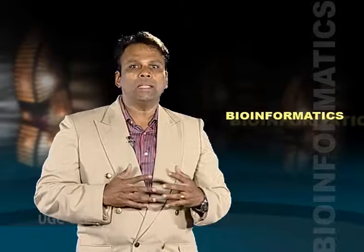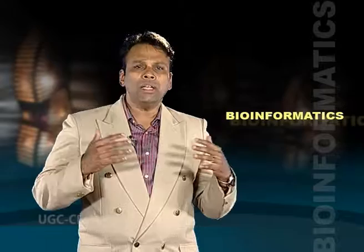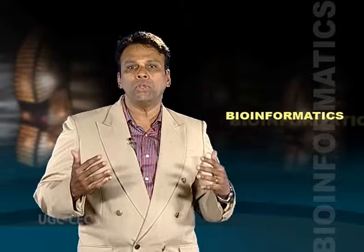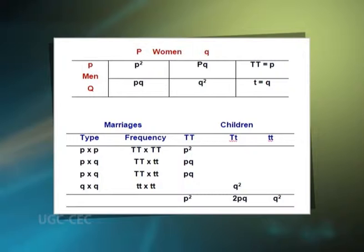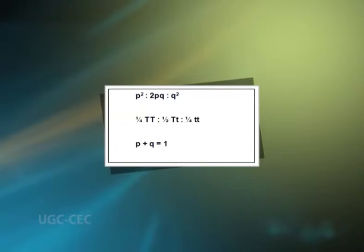The above result can be generalized. Let the proportion of homozygous tasters in the original population be P and the proportion of homozygous non-tasters be Q. The total is P + Q = 1. In the F1 generation produced by random matings, the three genotypes — homozygous taster, heterozygous taster, and homozygous non-taster — appear in the proportion P² : 2PQ : Q². The same frequency is obtained in the F2 and succeeding generations, so the proportions of the three genotypes remain constant.